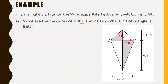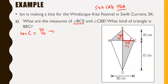Relative to angle C, 40 is the opposite side and the other 40 is the adjacent side. Opposite and adjacent means we use tan. So tan of C equals 40 divided by 40. Taking the inverse tan of both sides gives us angle C equal to 45 degrees right on the nose. So angle BCE equals 45 degrees.